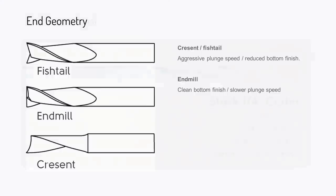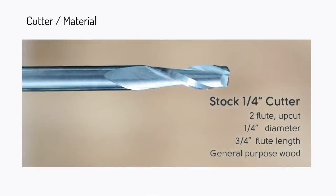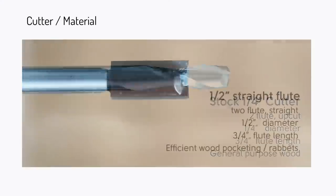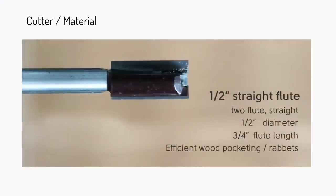Here's a visual of our stock cutter — quarter-inch, three-quarters max flute length. This is a good cutter for general-purpose wood cutting. The only downside with upcutting is you'll get a little bit of fuzz on the top of your cuts, but you just hit that with sandpaper and you're good to go. This is a very good cutter to kick off cutting a wide range of material, but it's primarily focused for wood.